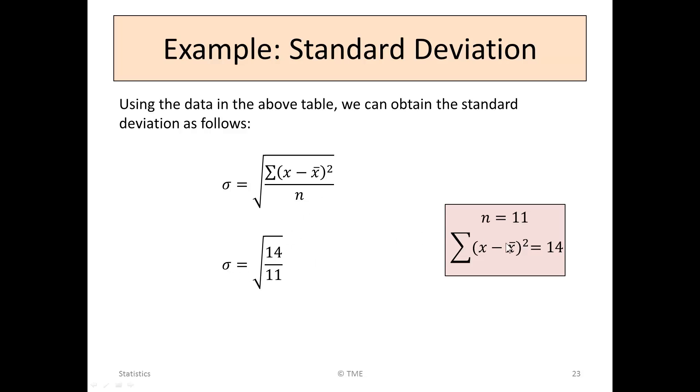So all we've got to do is substitute that value, and we also know the value of n. So sigma is 14 from this, and 11 from the n. So the square root of 14 over 11.